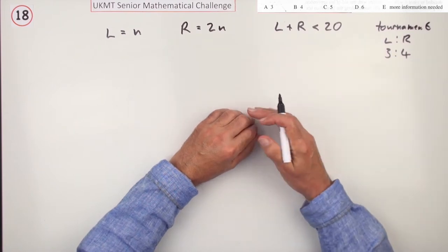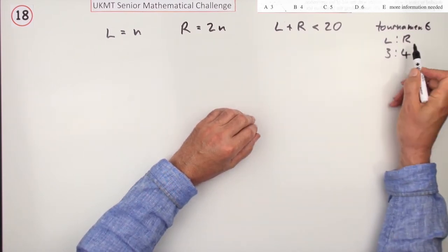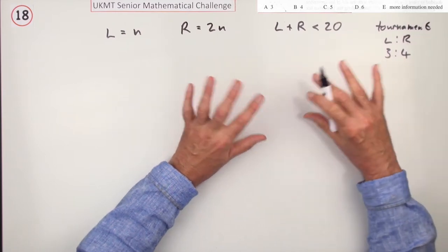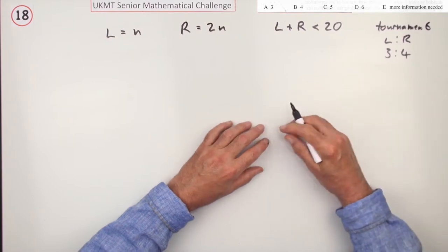They have a competition and as a result of the matches the ratio of left-handed winners to right-handed winners is 3 to 4 and it says there's no draws. So 3 to 4 is the ratio of the total number of matches.